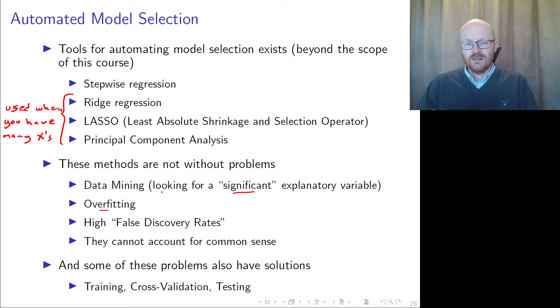Overfitting is when you can explain the movement in the Y variable with all these X variables, but if you look into the future, then the model does not do very well. It does not forecast very well. So you might have high false discovery rates.